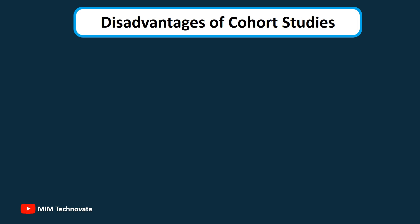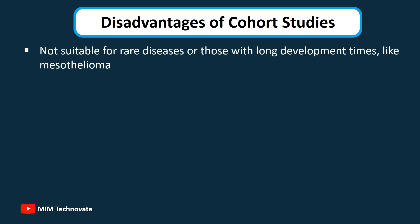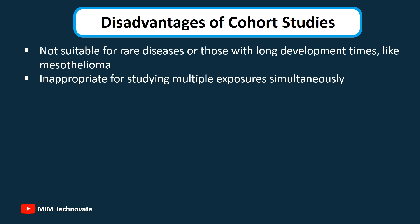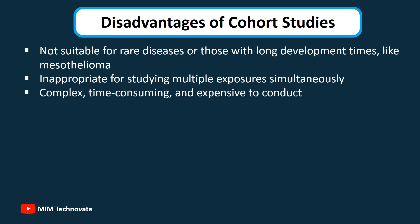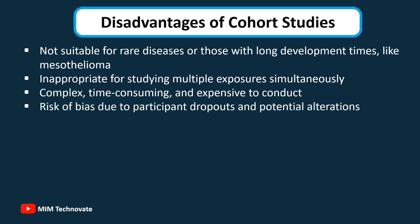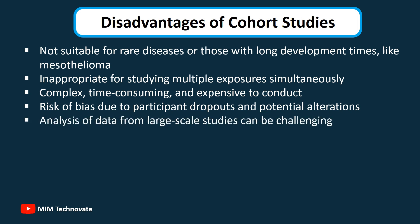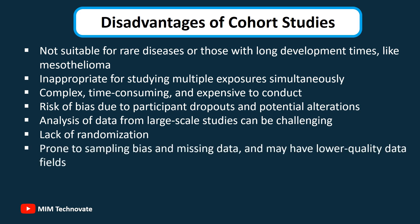Disadvantages of cohort studies: They are not suitable for rare diseases or those with long development times, like mesothelioma, and are inappropriate for studying multiple exposures simultaneously. They are complex, time-consuming, and expensive to conduct, especially when collecting prospective data over many years. There is a risk of bias due to participant dropouts and potential alterations in behavior because of study awareness. Analysis of data from large-scale studies can be challenging due to numerous confounding variables, and lack of randomization reduces robustness compared to randomized controlled trials. Retrospective cohort studies, while less time-consuming, are prone to sampling bias, missing data, and may have lower-quality data fields.